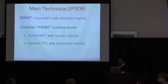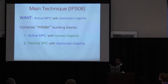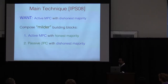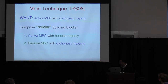On a high level, this approach by Ishai, Prabhakaran, and Sahai takes two kinds of MPC protocols and combines them to get better security. The two milder building blocks are: first, active multiparty computation with honest majority — this is known since the eighties, BGW, CCD — which requires no cryptography. The second is a passive protocol against dishonest majority. Combining these two gives active security against dishonest majority.